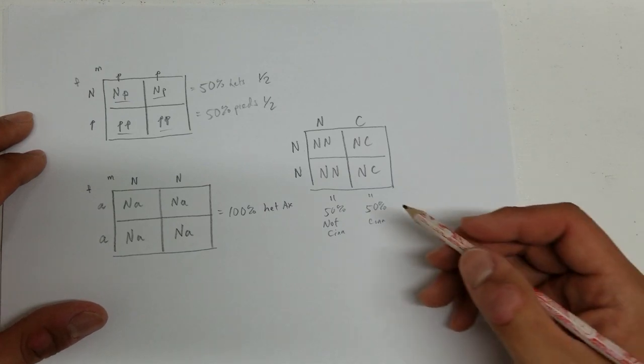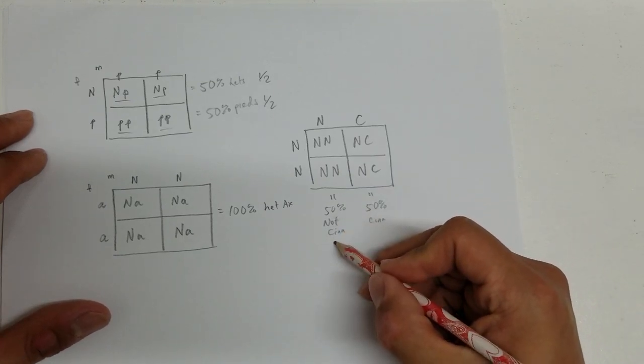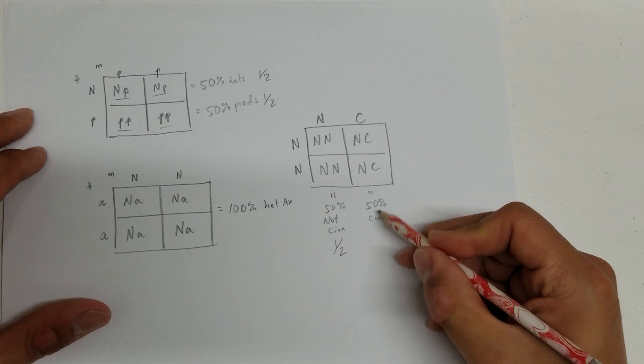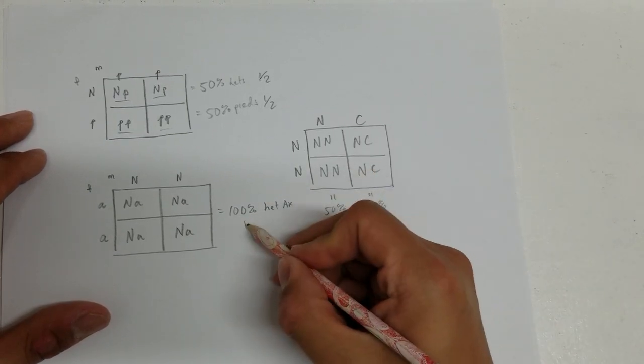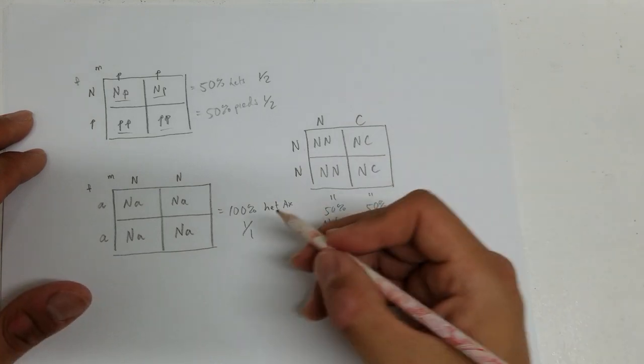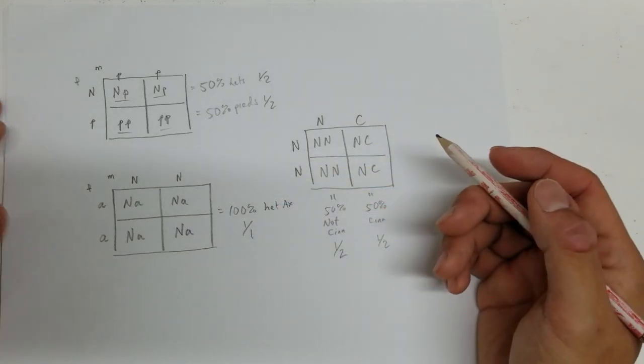So I like to always convert these into fractions. So again, 50% equates to 1 half. 50% equates to 1 half. And by the way, over here, 100% is 1 over 1 or just 1. That's pretty simple.